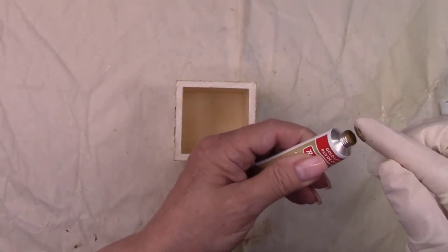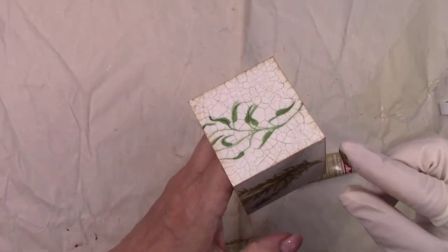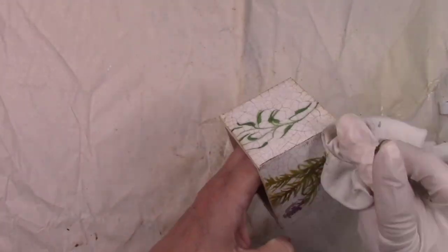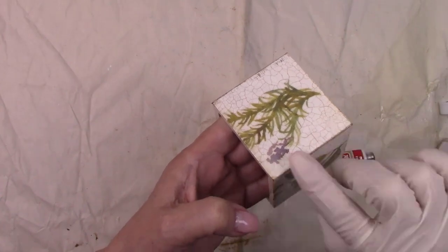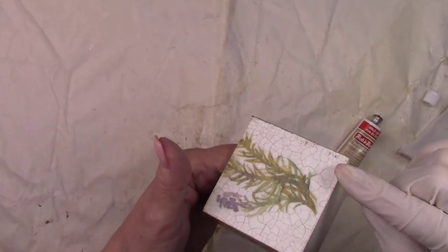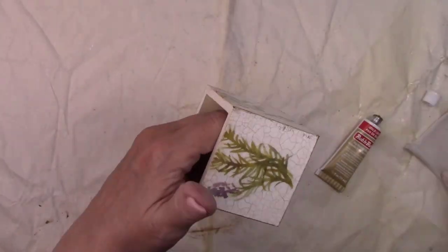Now I'm taking a little gold rub n buff on my finger and rubbing it around all the edges. This will add to the aged and worn look. Plus a little gold adds to the prettiness.